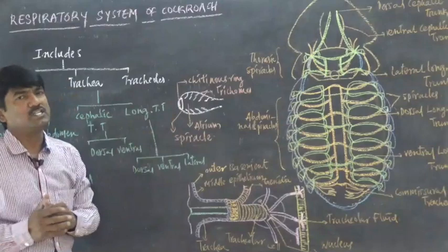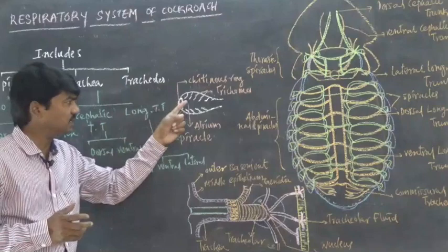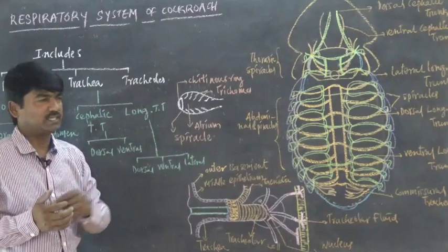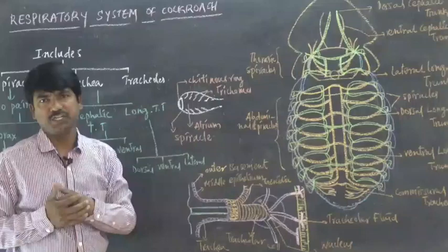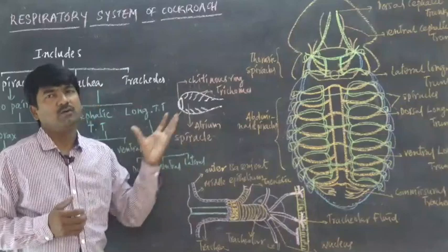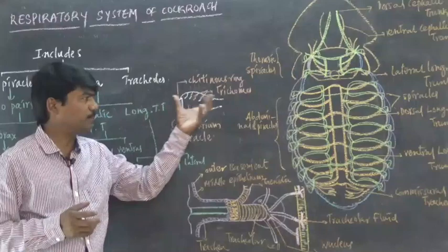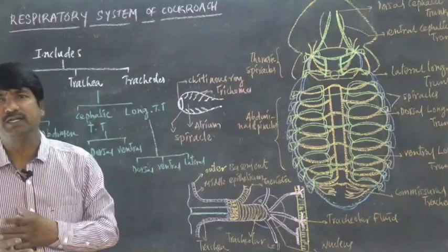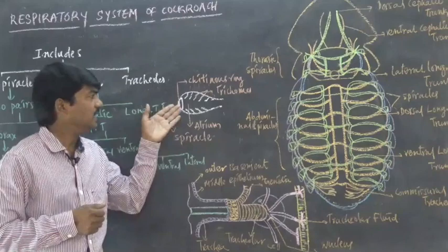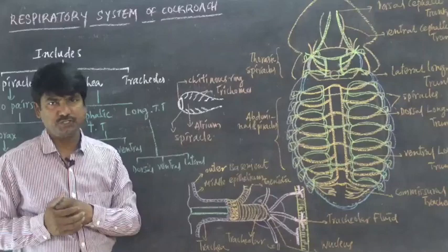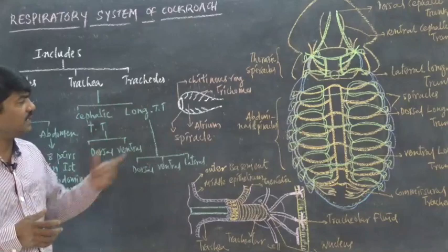Each spiracle is covered with a chitinous ring, also known as the peritrim — 'peri' means around and 'trim' means small hole, so it is the ring around the hole. Inside the spiracle, the inner surface is lined by hair-like projections called trichomes, which prevent dust particles from entering. The cavity inside the spiracle is known as the atrium.